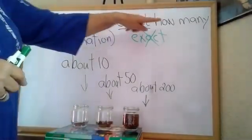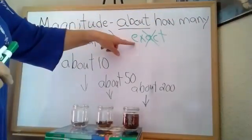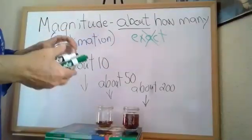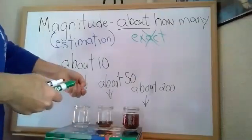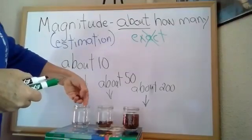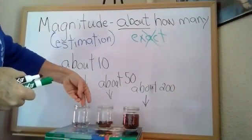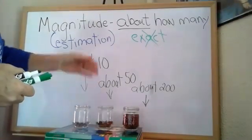Today we talked about magnitude, which means about how many, it's estimation. It is not an answer that is exact. If I wanted to know exactly how many was in here I could count them. Let's just try with the little one. Count them with me: 1, 2, 3, 4, 5, 6, 7, 8, 9, 10, 11, 12, 13, 14, 15.